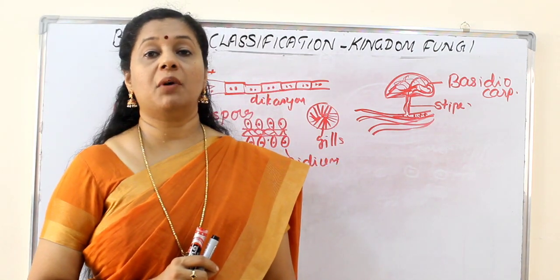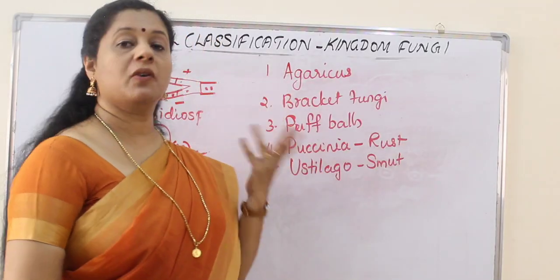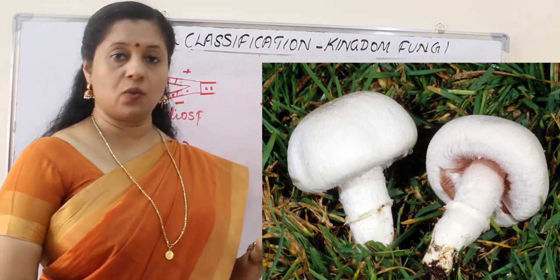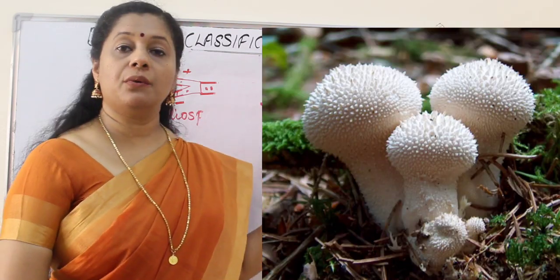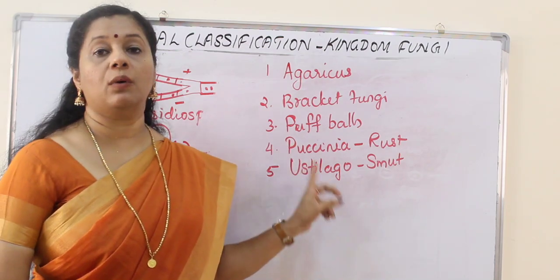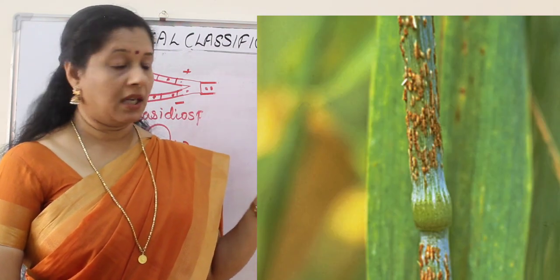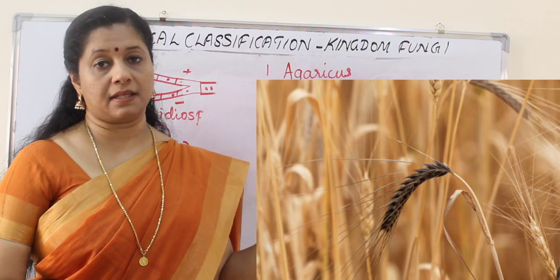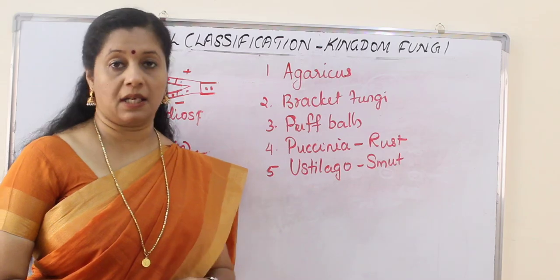The important members of this group include Agaricus, which are the common mushrooms, as well as toadstools, bracket fungi, and puff balls. Two parasitic forms are Puccinia and Ustilago. Puccinia is the fungus that causes rust of wheat, whereas Ustilago causes smut disease.